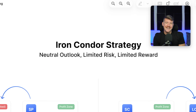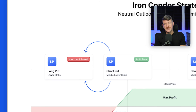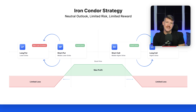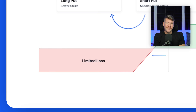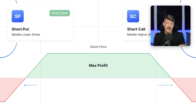What's an iron condor? It's a neutral option strategy built from two credit spreads. You sell an out-of-the-money put spread and an out-of-the-money call spread, both with the same expiration date. You collect a credit up front, have defined risk on both sides, and you profit if the stock stays in a range and those options expire worthless. Basically, you're saying: I don't think the stock is going to go really high or really low — I think it's going to stay somewhere in the middle.